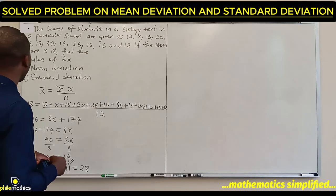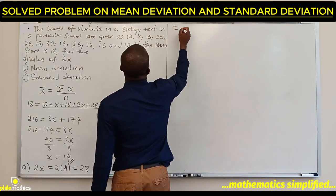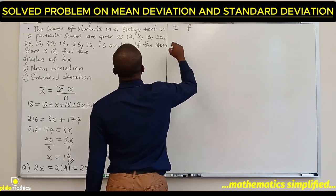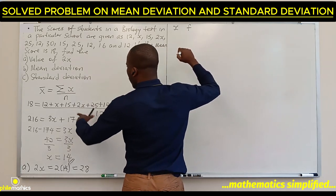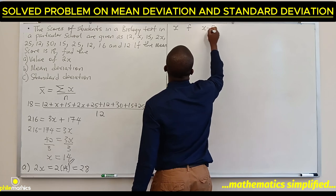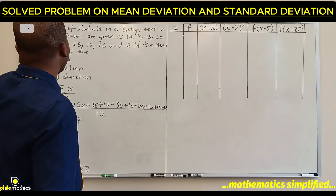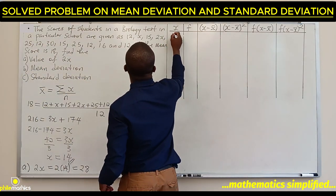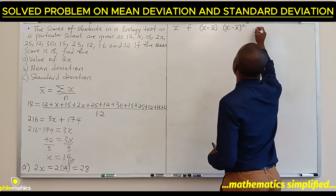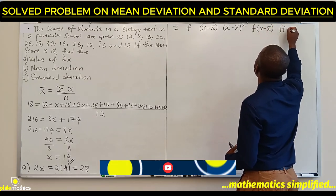In our table, our first values will be the x, the next will be the frequencies. Since we have gotten our mean, we will have x minus x-bar. We will have x minus x-bar squared. And therefore, we will look for f times x minus x-bar and f times x minus x-bar squared. We're going to put our x's in ascending order.